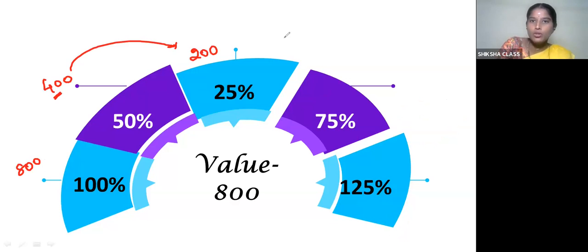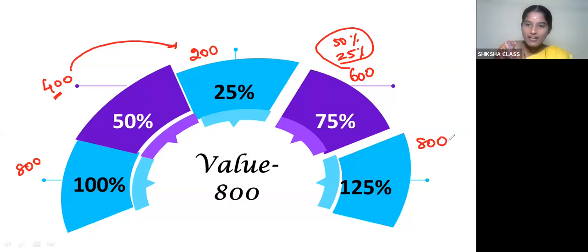For 75%, we know that 50% of 800 is equal to 400. If you add another 25%, you'll get 75%. The answer is 600. For 125%, you go 100% plus 25%, or otherwise 50% plus 75%. If you add them together, you'll get the answer. Is that clear for you?